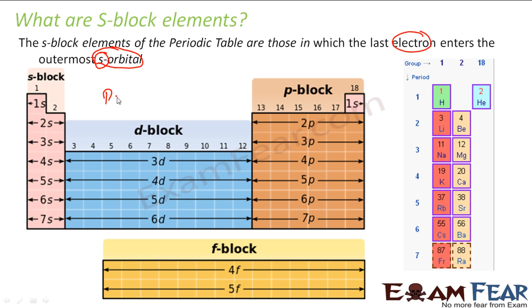All those which are in pink color are S-Block Elements — these elements and helium also. But in this chapter, since we have already studied a lot about hydrogen in the past, in the last chapter, we won't be focusing on hydrogen. We will be focusing more on alkali and alkaline earth metals. The one in dark pink is the alkali metals and the one in light pink is the alkaline earth metals. The blue is neither alkali nor alkaline earth metals, but it is part of S-Block Elements. We will not discuss much about helium now.